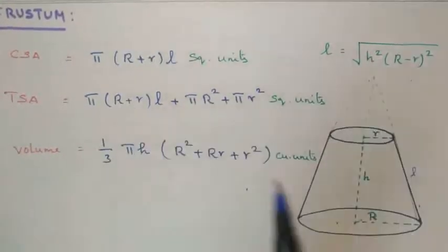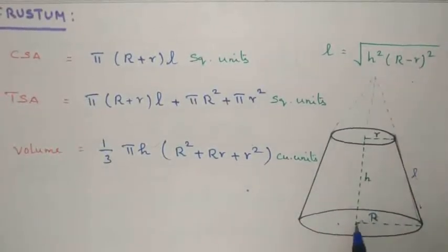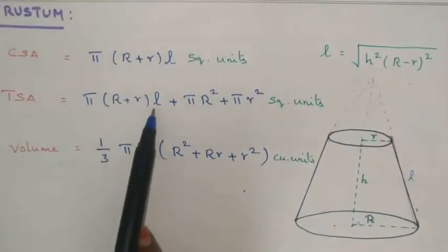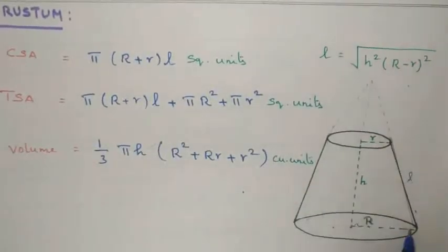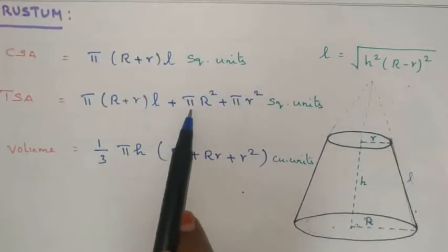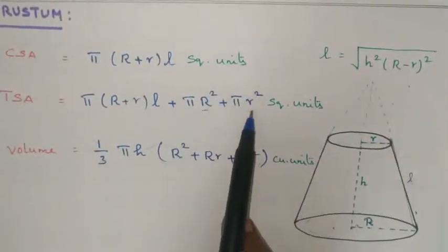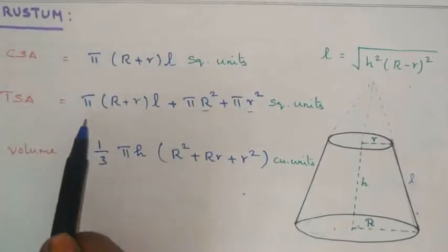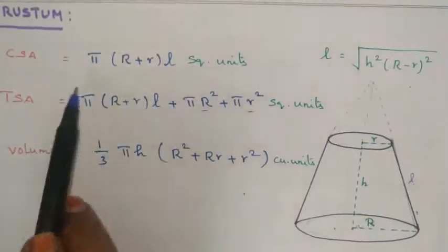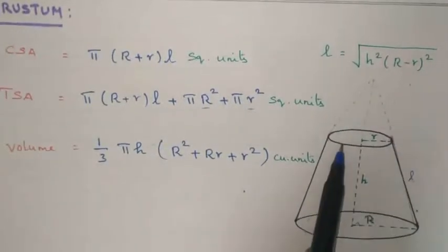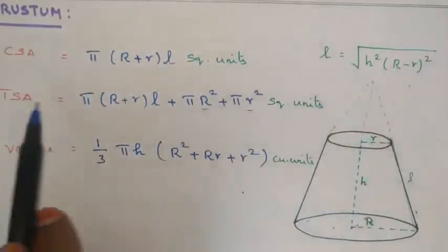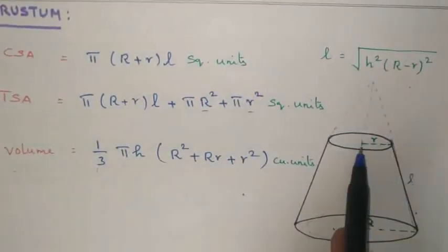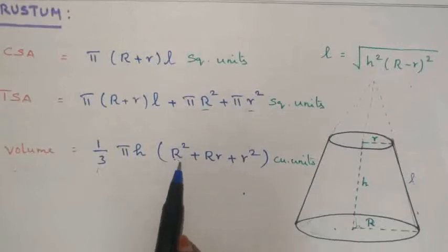For the frustum, the TSA includes CSA plus the areas of both circular bases: TSA = π(R + r)l + πR² + πr². The volume of the frustum is (1/3)πh(R² + Rr + r²), where h is the height.